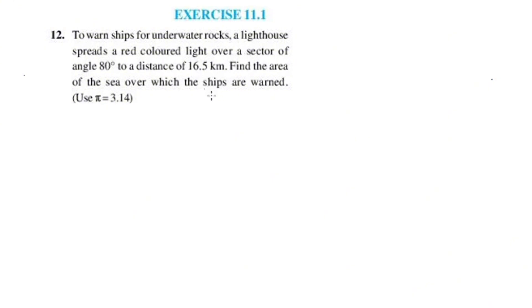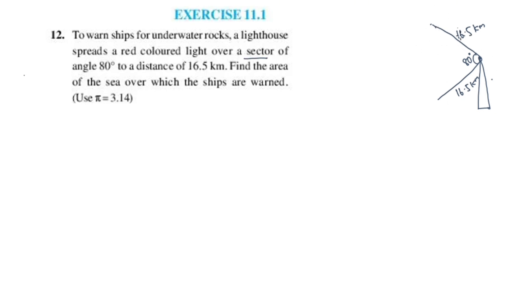We can see the light spread over the area. The radius here is 16.5 km. There is a sector with a central angle, and the light spread forms an arc. This is the form of the area of the sea. We need to find the area of the sea over which the ships are warned.